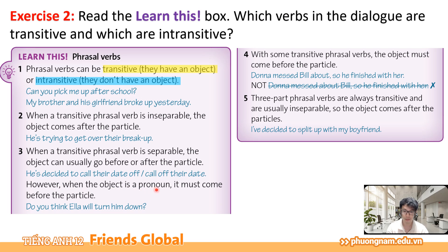However, when the object is a pronoun, it must come before the particle. Trong trường hợp tân ngữ là một đại từ, thì đại từ này phải đứng đằng trước tiểu từ. Ví dụ: 'Do you think Ella will turn him down?' — cụm động từ 'turn down' là ngoại động từ tách rời được, nên đại từ 'him' phải đặt trước tiểu từ 'down'. Những pronoun chúng ta có là: me, us, them, him, her, it.